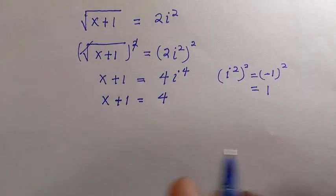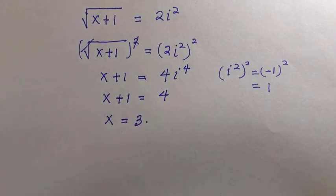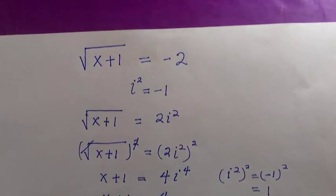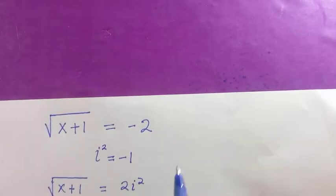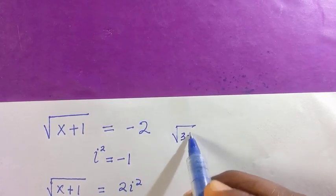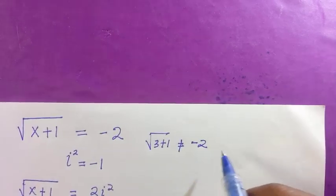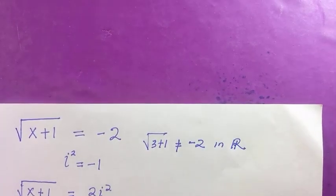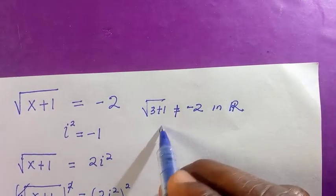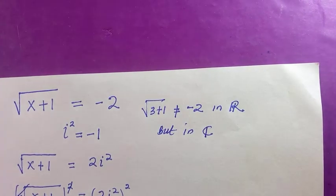Therefore x here equals three. But looking at this, if we try to substitute it in the given problem above, we will discover that it's not going to be equal. So doing this, we have the root of three plus one, which is not equal to negative two in a real number, but this is equal in a complex number from these assumptions.